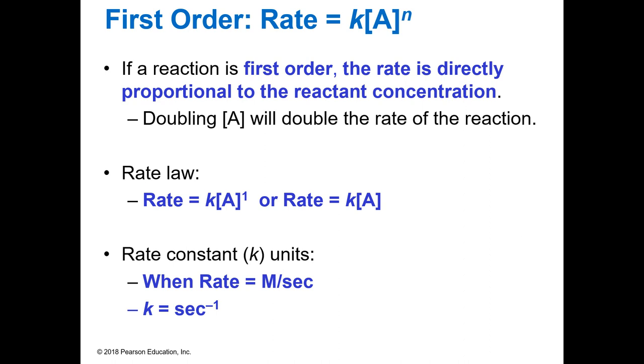If the reaction is a first order, so K times A to the first power, then the rate is going to be K times A. Because A to the first power is A. And you're going to have molarity per second, again, as your rate.